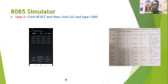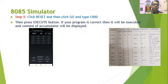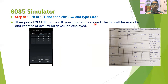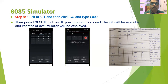To execute the program, press the Reset button again. Then click the Go button. Type the initial address of the memory location from where the ALP code is stored, which is C000, and then press the Execute button. If your program and data entered are correct, the program will get executed and the content of the accumulator will be displayed on the screen — this is your result.